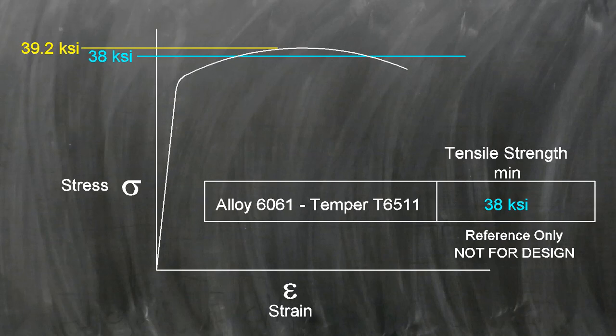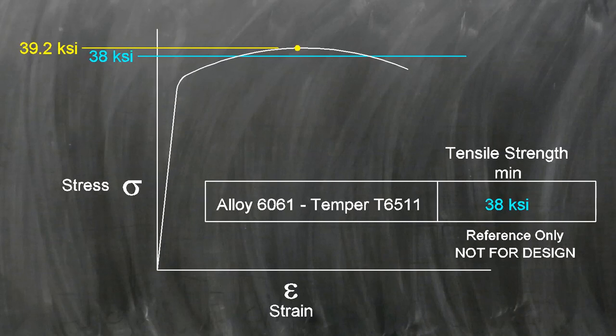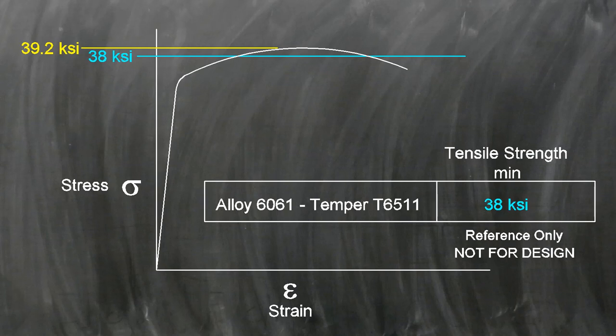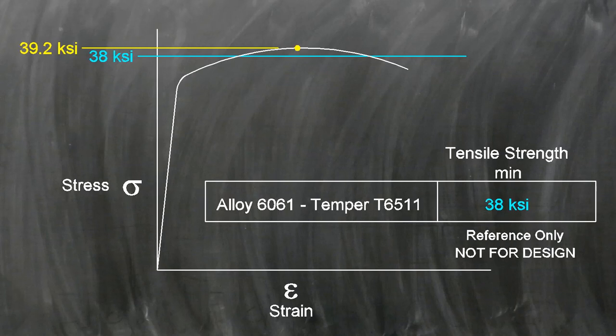Our test result shows a tensile strength above that minimum. Our aluminum could withstand 39.2 KSI. This diagram shows that our material is as strong as it should be.